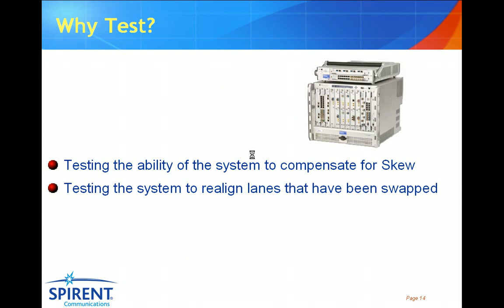So, why test? Basically, we're testing the ability of the system to compensate for skew and dynamic skew within the complete system under test. We're also testing the system's ability to realign lanes that have been swapped. Together, we can introduce skew and lane swapping to make a more rigorous test to verify that the system can indeed compensate for these two fundamental problems which could occur.